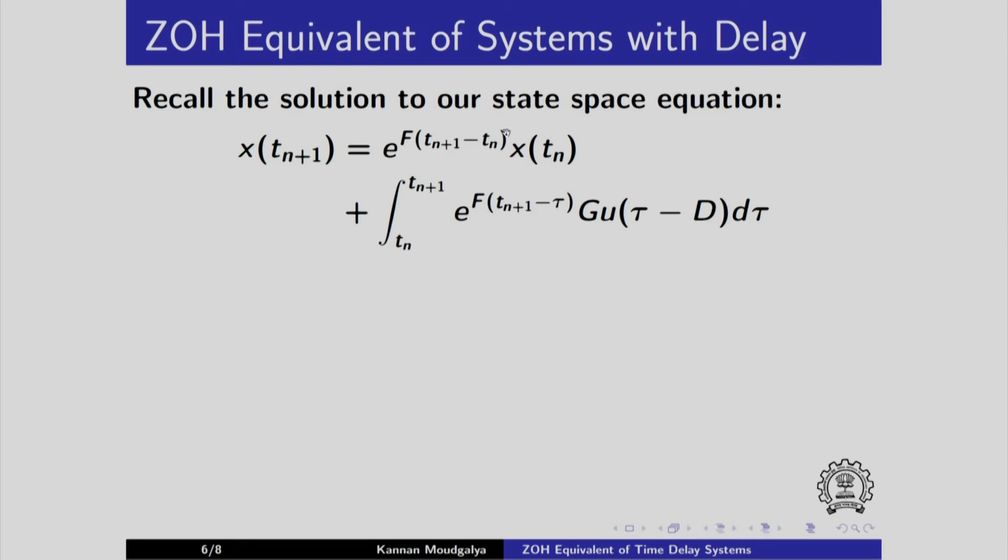Recall the solution to our state space equation. In the place of u, now we have to use u of tau minus d. Previously, there was no minus d, it was u of tau. Now we have to put u of tau minus d.